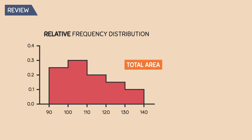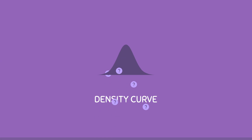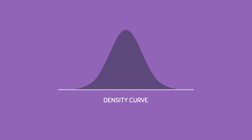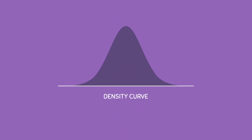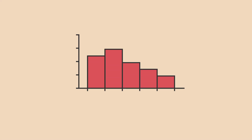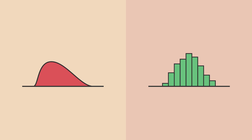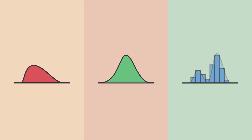The total area of any relative frequency distribution is always equal to 1 or 100%. So what is a density curve, and where does it come from? A density curve is just the curve that helps us visualize the overall shape of a distribution. If we take the histogram we just worked with and draw a curve around its distribution, we have essentially made a density curve. This can be done with any type of histogram, with any shape and any form.